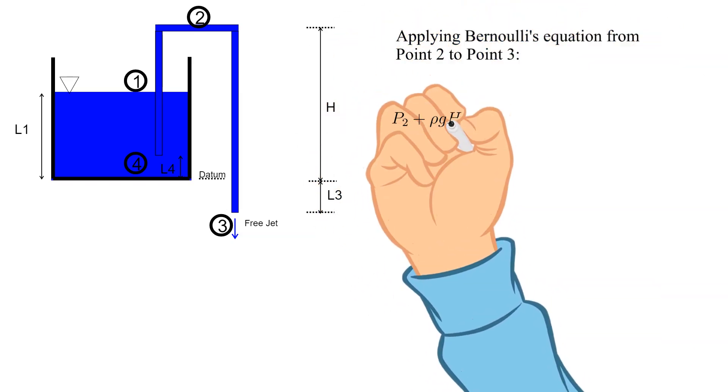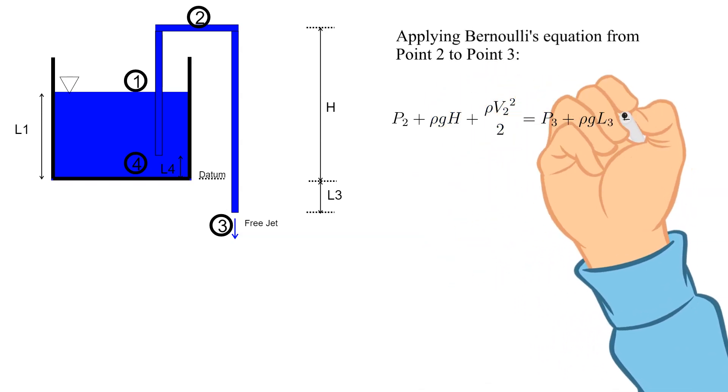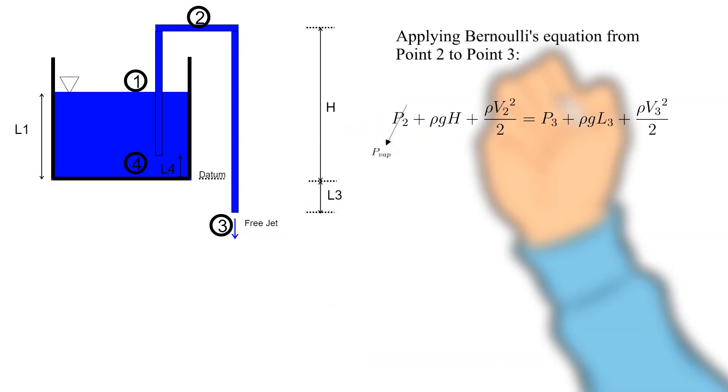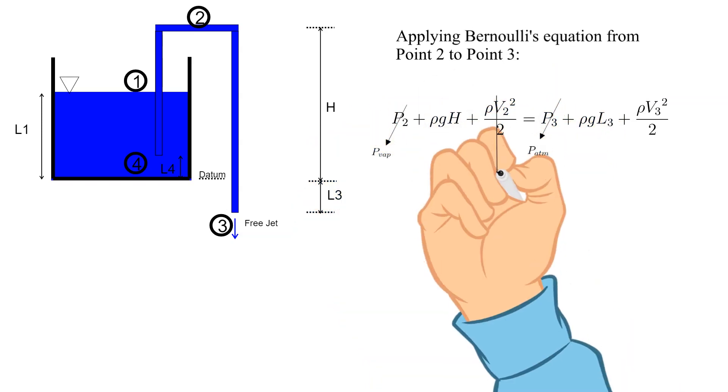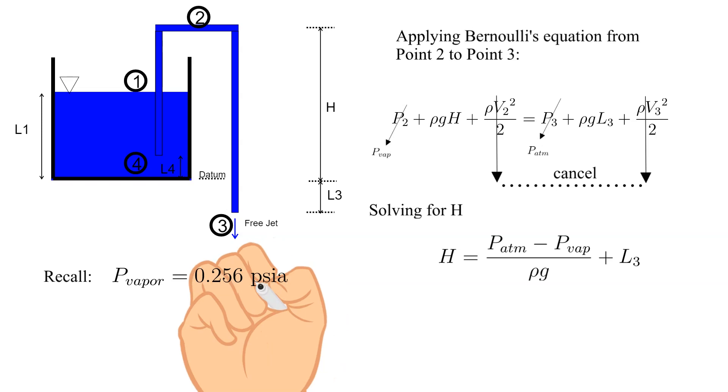Applying Bernoulli's equation from point 2 to point 3. P2 plus rho GH plus 1 half rho V2 squared equals P3 plus rho GL3 plus 1 half rho V3 squared. Notice that the dynamic pressure terms, which are the velocity squared terms, cancel. This is why we do not need to know the velocity at 2 or 3.